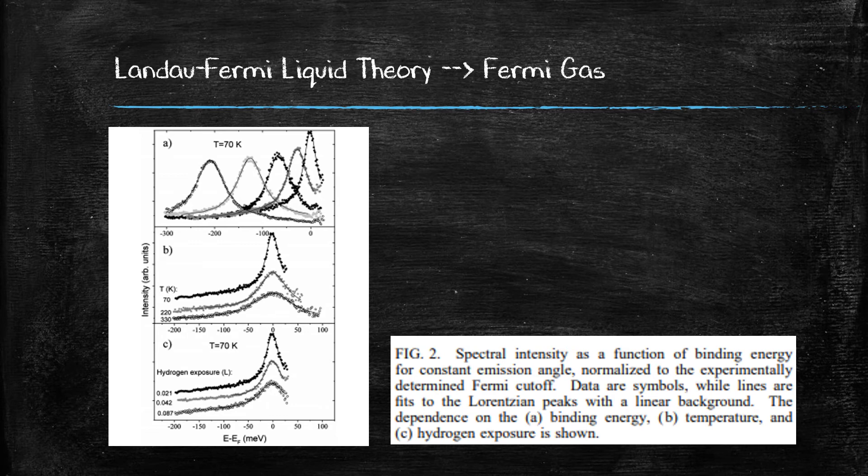Simply put, the lower the temperature, the more likely you are to find a particle at or around the Fermi energy. And this is with interactions turned on, which tells us the temperature plays a much bigger role in turning the Fermi liquid theory into the Fermi gas theory than the interactions.